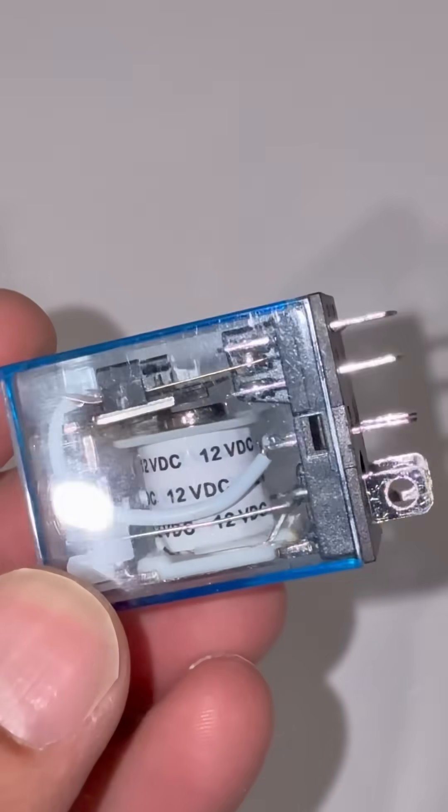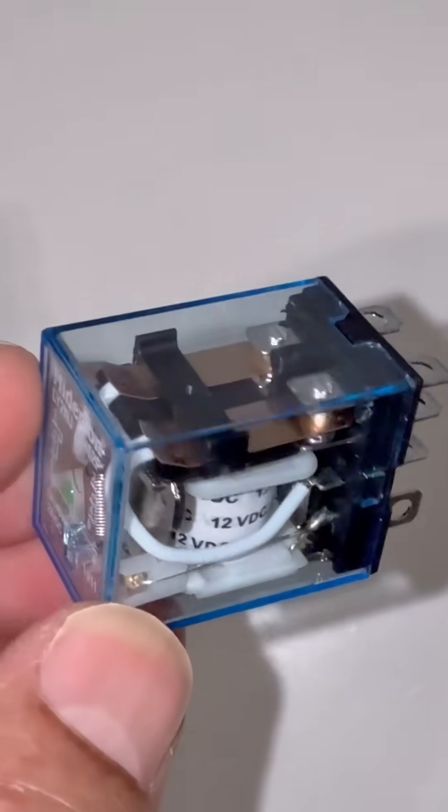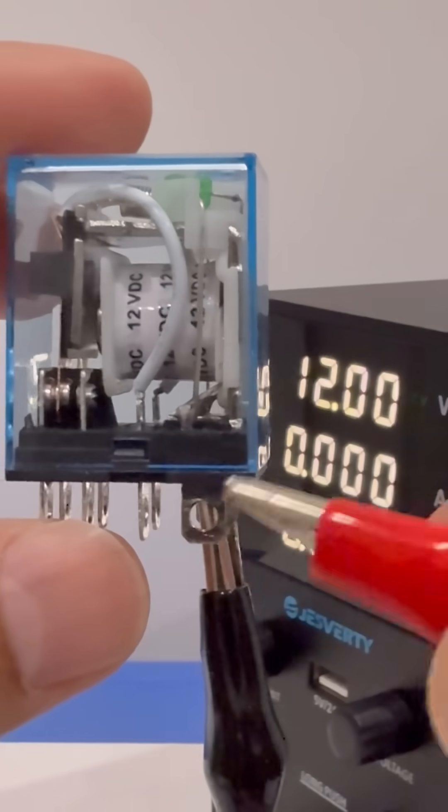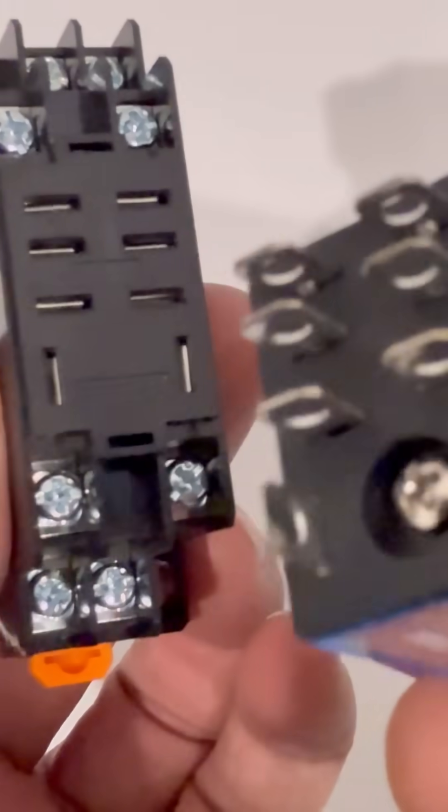This is an 8-pin DPDT relay, a double-pole double-throw relay, which acts like a remote-controlled switch, allowing us to control two separate 220-volt light bulbs using a low-voltage signal.